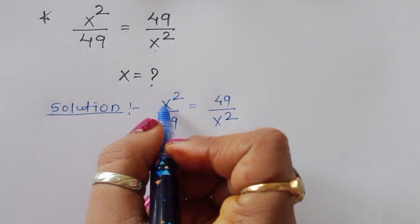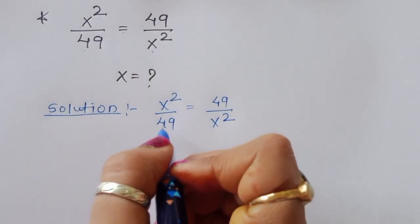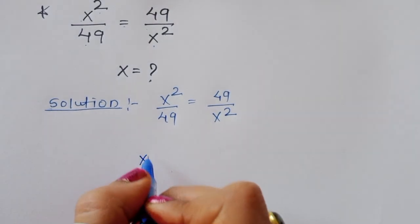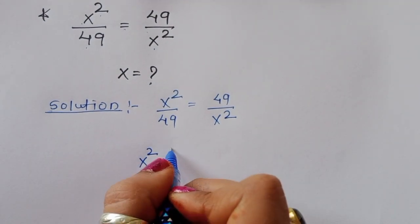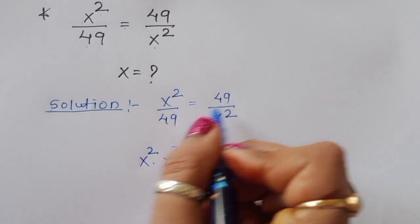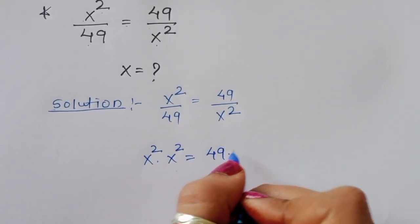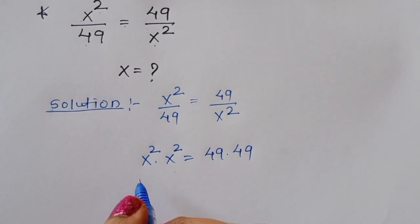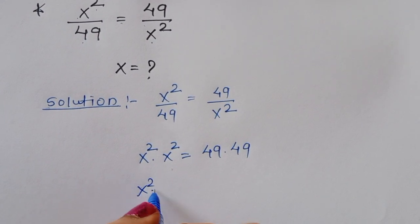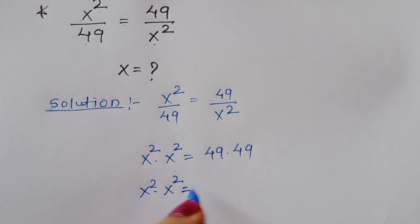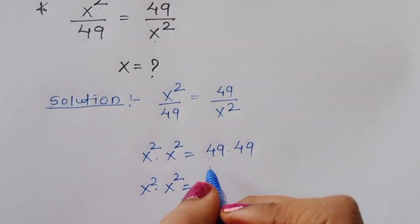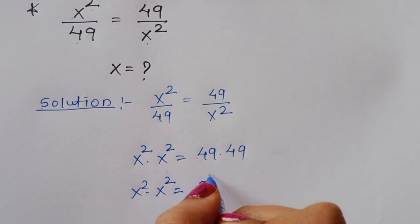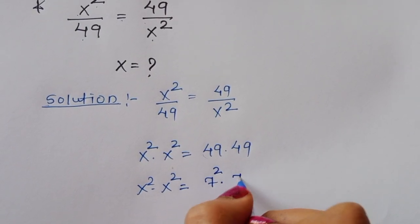We can do cross multiplication here, so x² times x² is equal to 49 times 49. Now x² times x² equals x⁴, and 49 can be converted into square form, so it becomes 7² times 7².